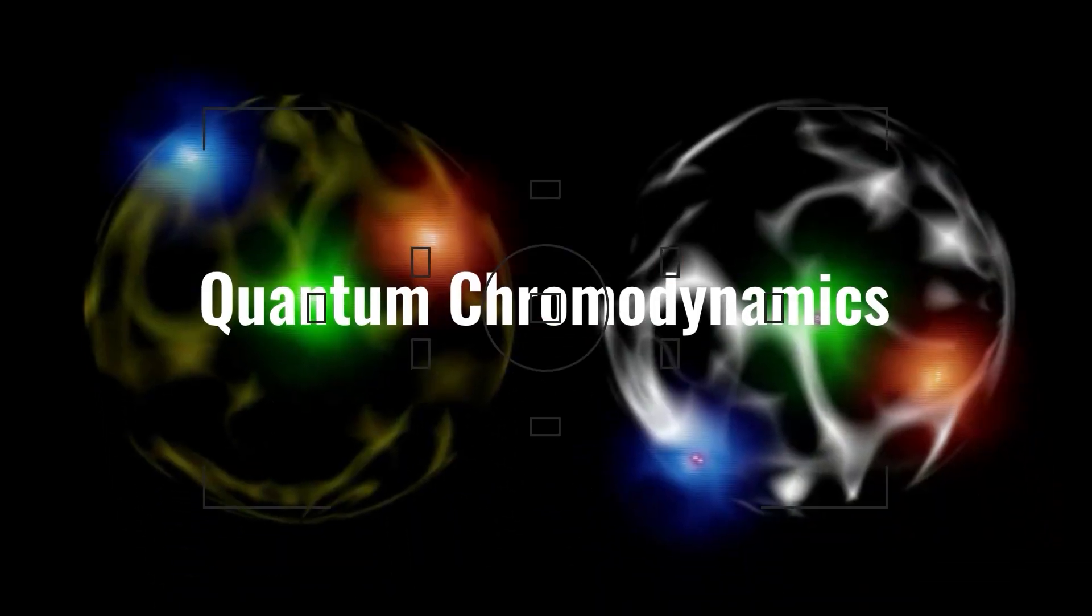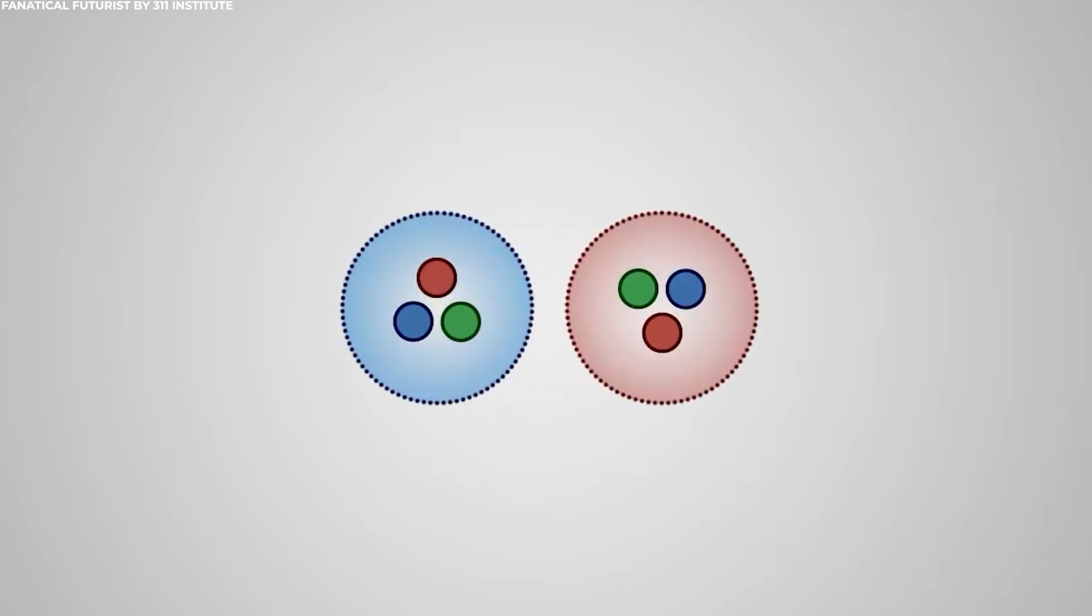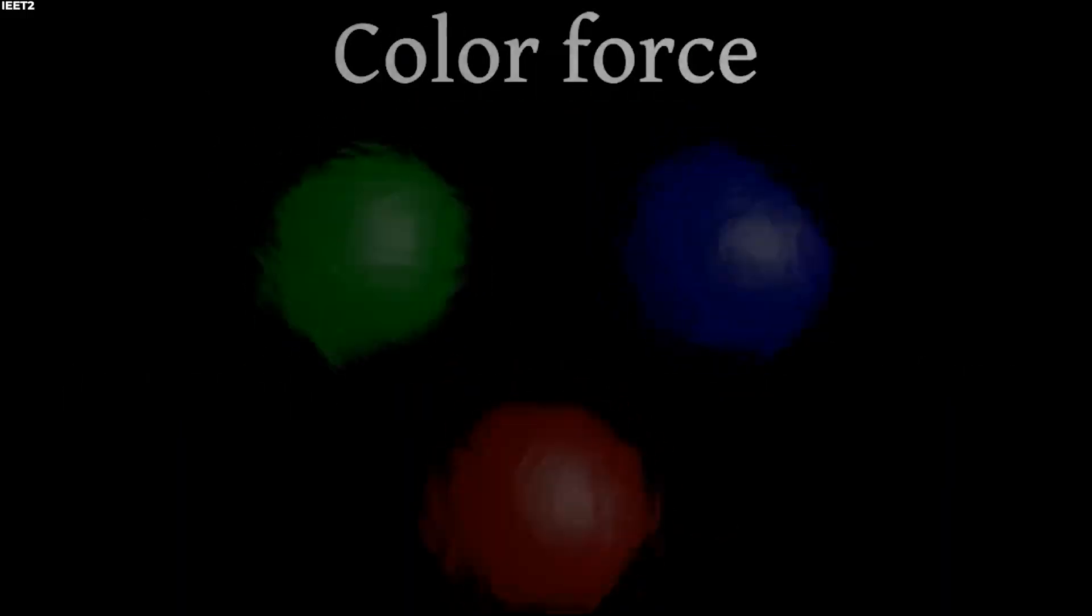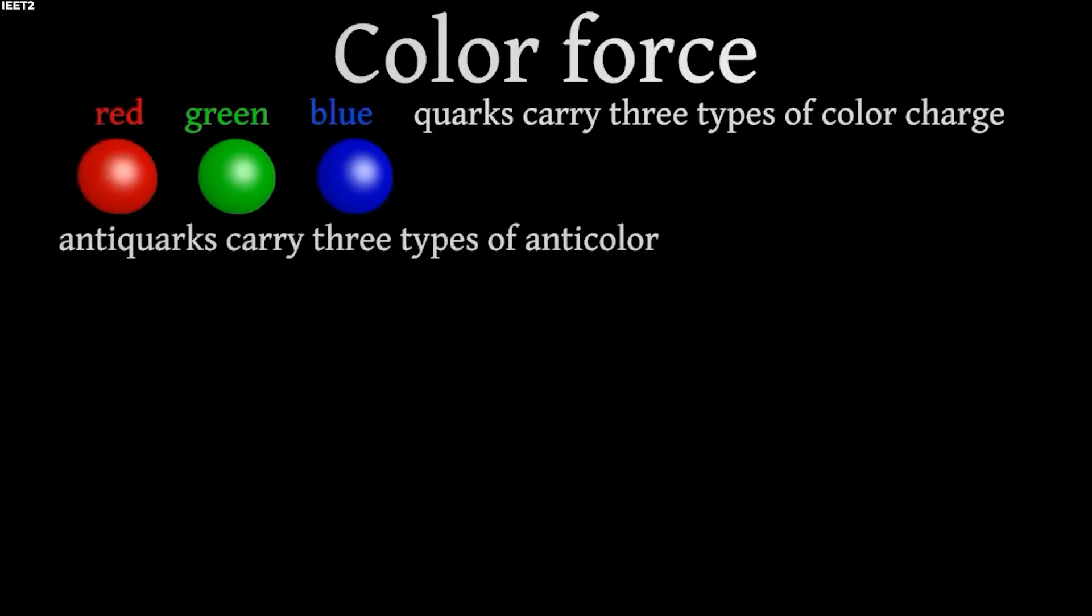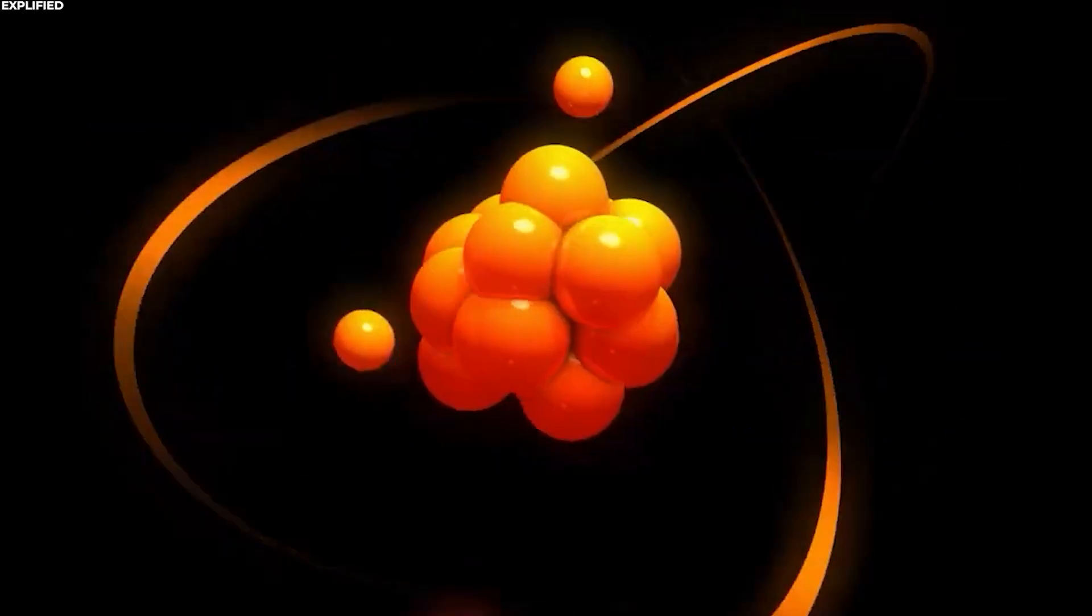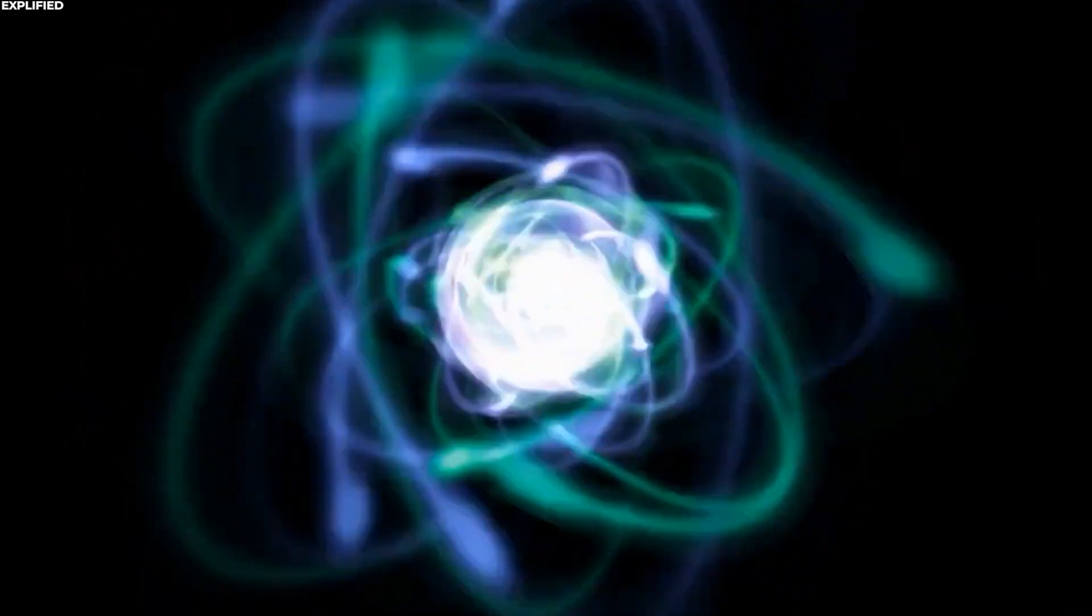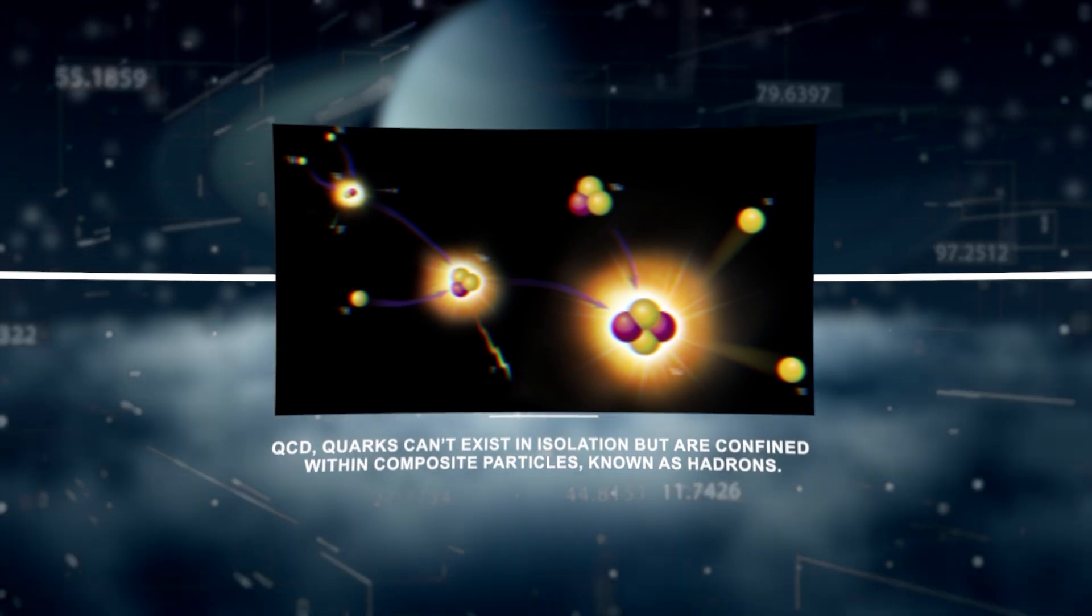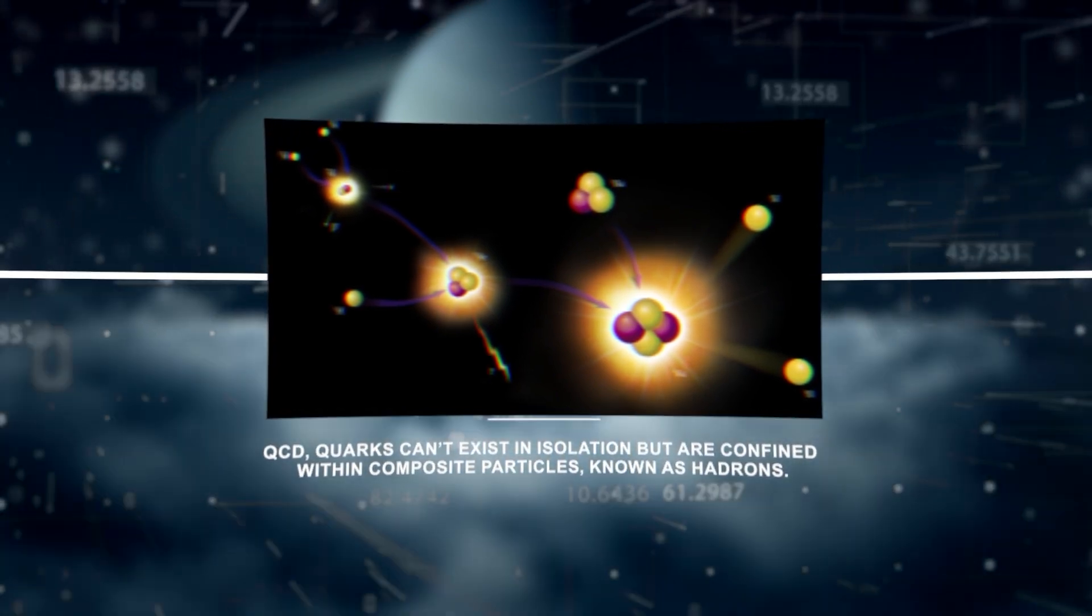Quantum chromodynamics, which are within the whole concept too, constitutes the framework that describes the strong nuclear force governing interactions between quarks, the fundamental constituents of particles like protons and neutrons. This force is carried by particles called gluons. Quarks possess a property known as color charge, an abstract concept unrelated to visual colors. Gluons, as we've touched on earlier on in this video, themselves carry color charge, contributing to the strong interaction. Due to the nature of the strong force described by QCD, quarks can't exist in isolation but are confined within composite particles, known as hadrons.